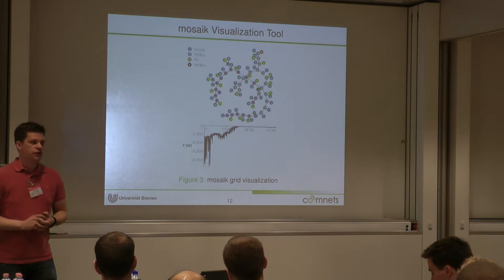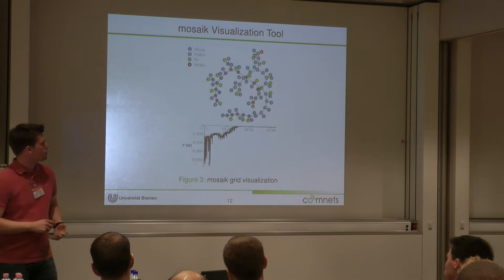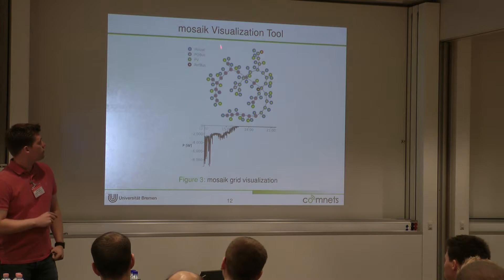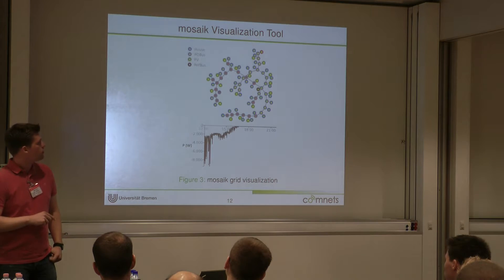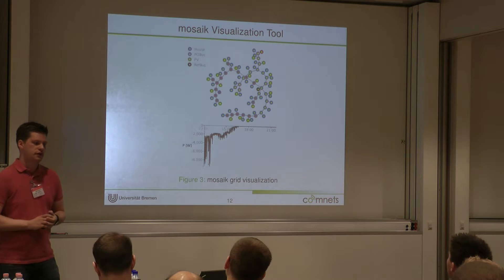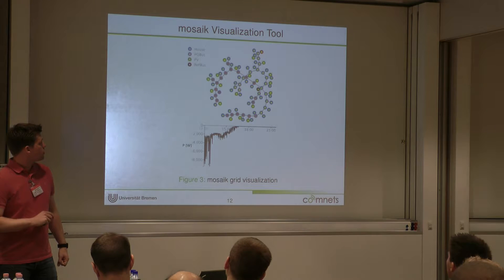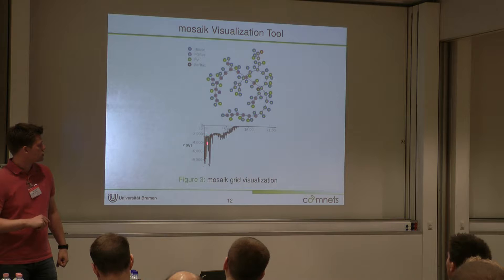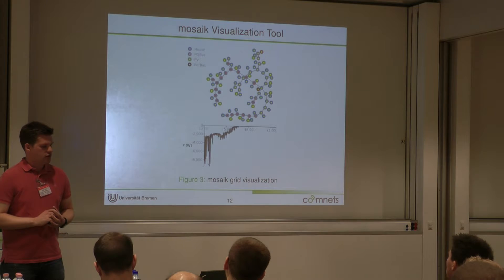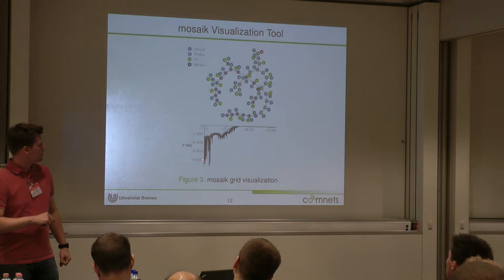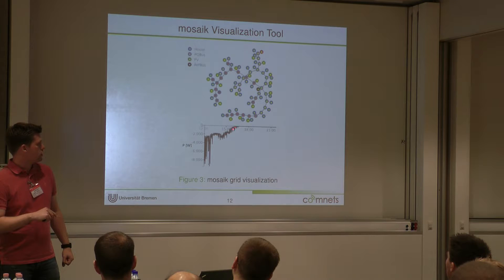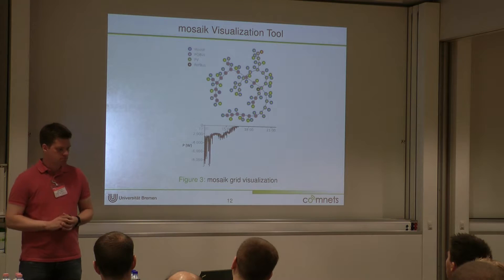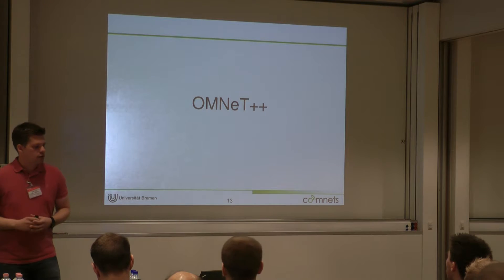As a result, we have a web interface showing such a simulation. This is from the example setup available online. We have several houses, a PQ bus which is basically a power bus, photovoltaic systems, and a reference bus — the black dot — connecting to the higher-level power grid. The photovoltaic systems are the green circles, the houses are the blue ones, and the selected red one is a photovoltaic system feeding in at maximum around 8 kilowatts into the system until sunset around 4 or 5 p.m.